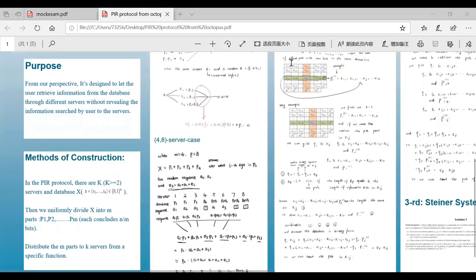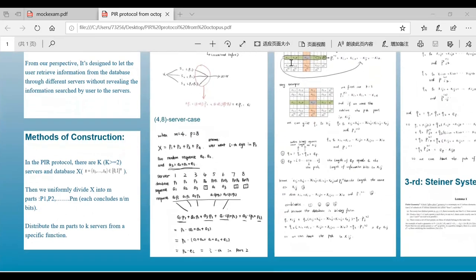In the PIR codes, there are k servers and the database x. We suppose that x is in binary form. Then we uniformly divide x into m parts.